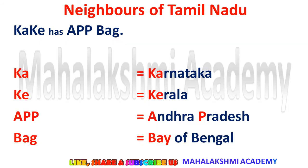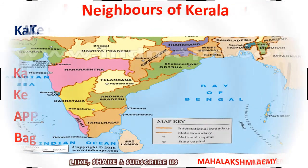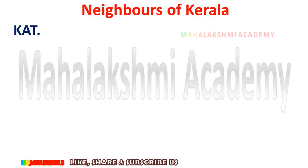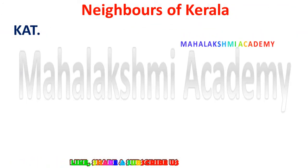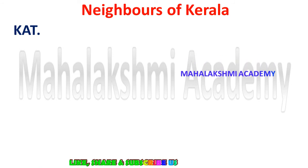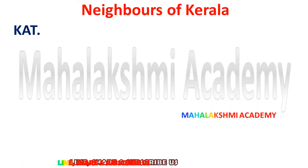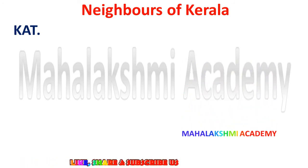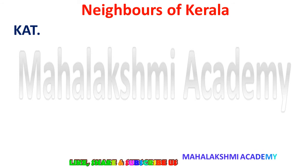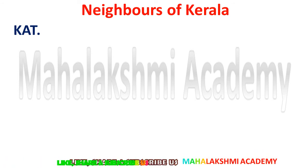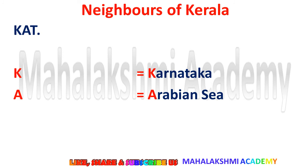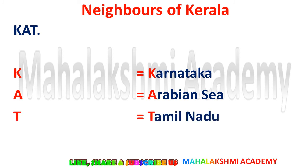The next topic is the neighbors of Kerala. The simple trick is 'CAT' — you simply say K-A-T, cat. K is for Karnataka, A is for Arabian Sea, and T is for Tamil Nadu. This way we can learn the neighbors of Kerala.